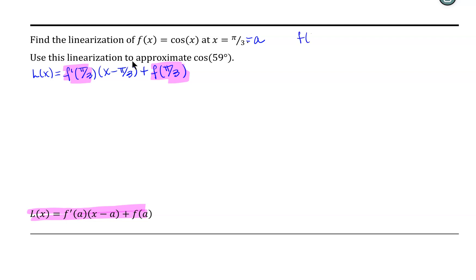So f(π/3) is equal to cos(π/3), and cos(π/3) is equal to 1/2.